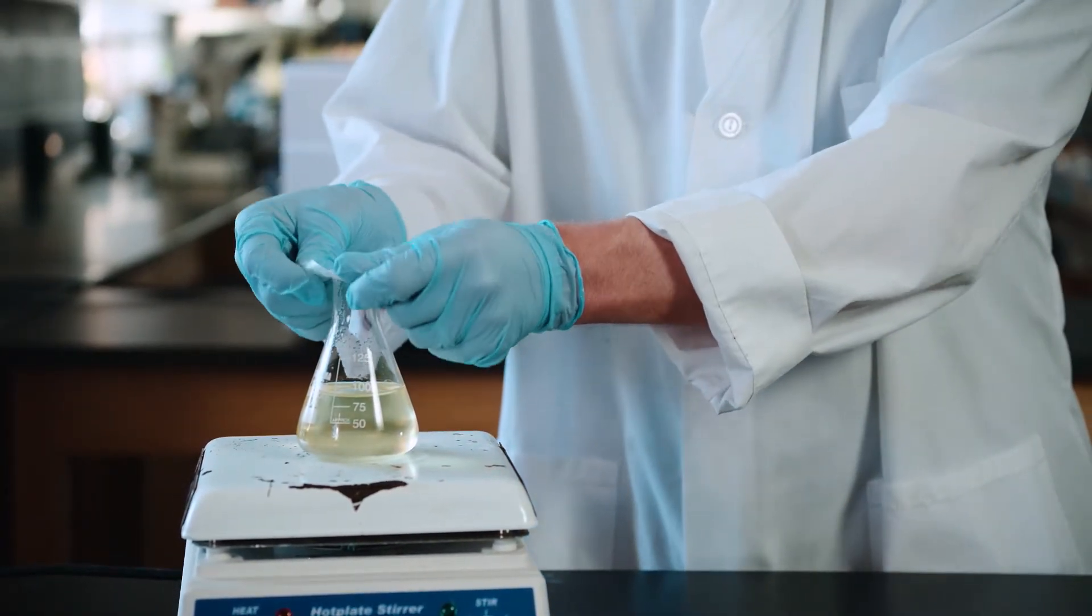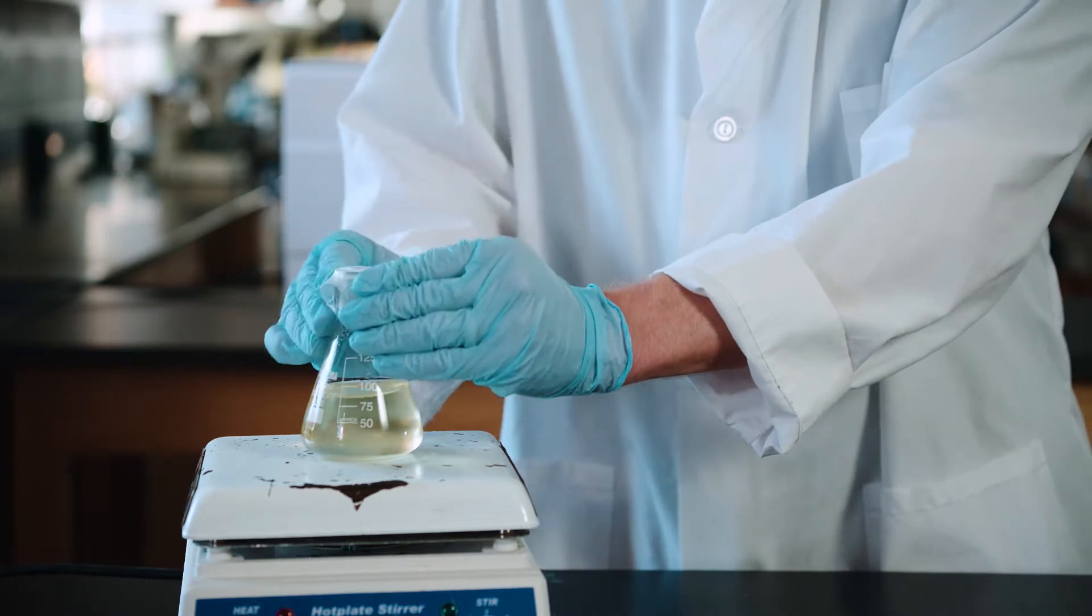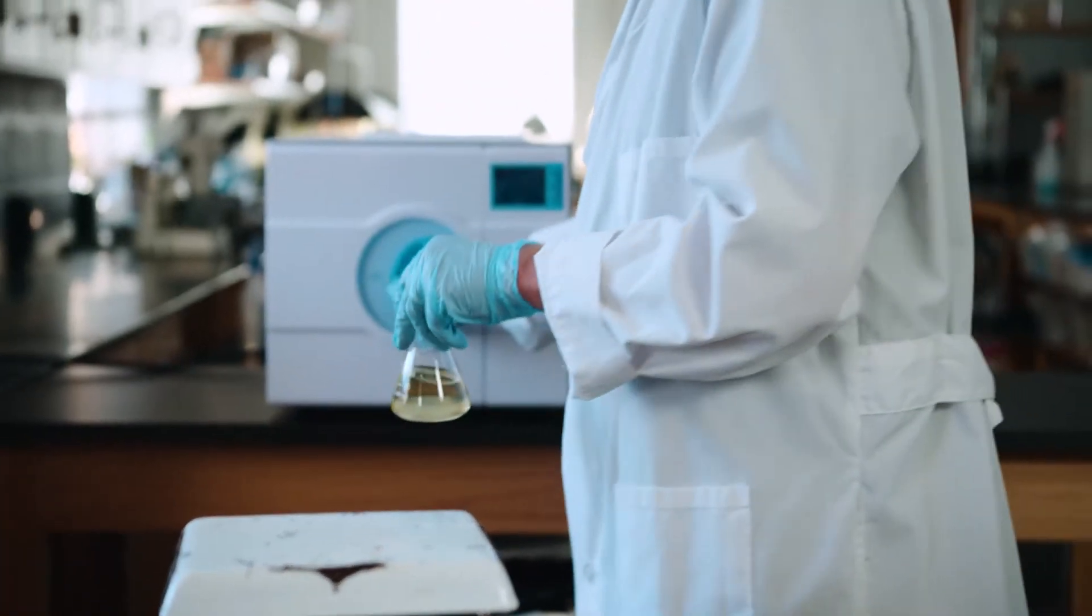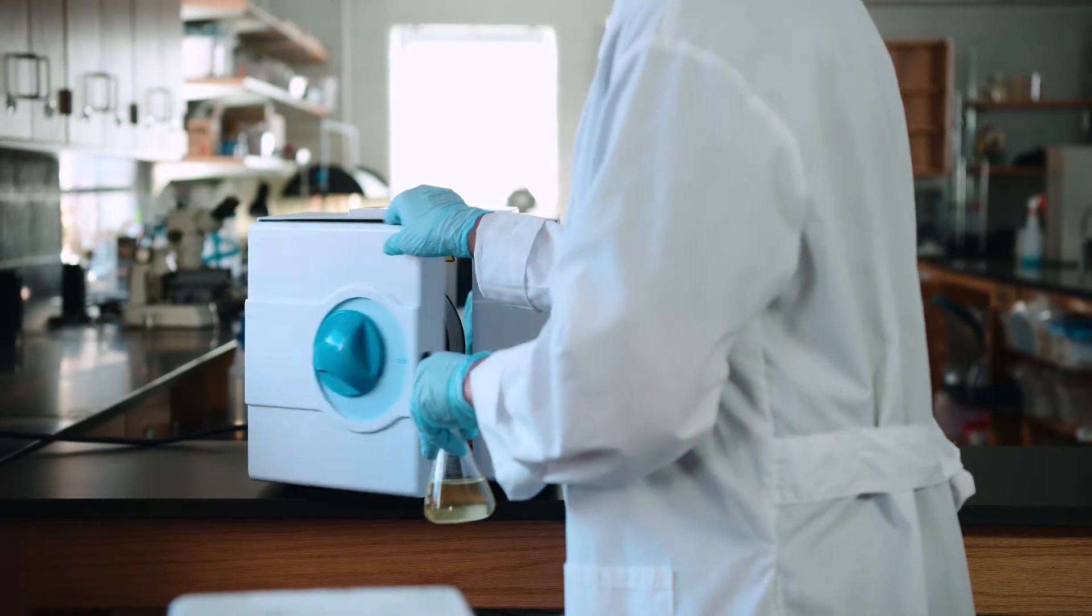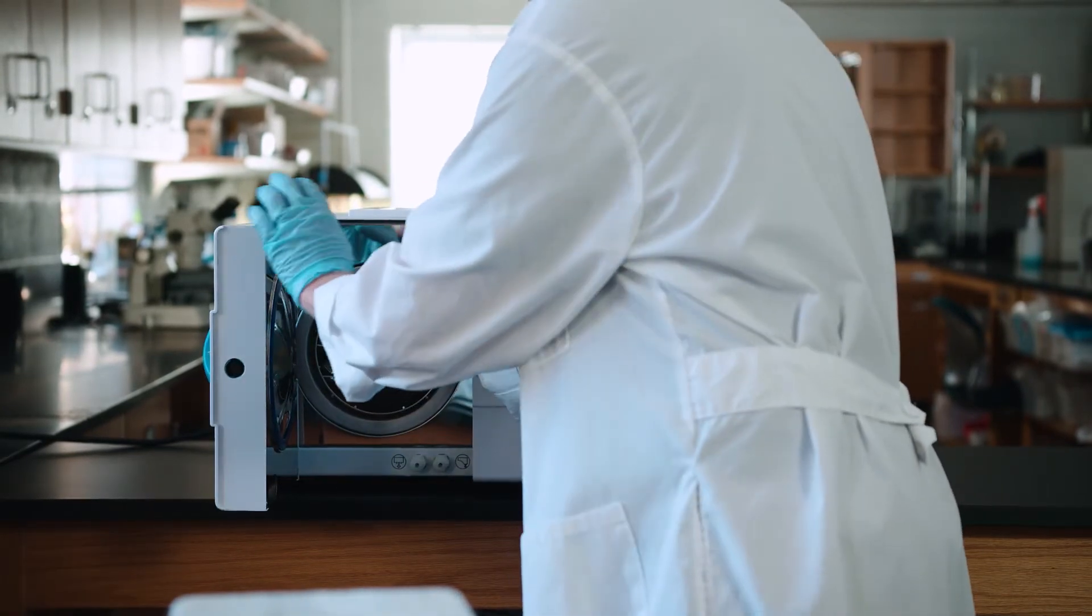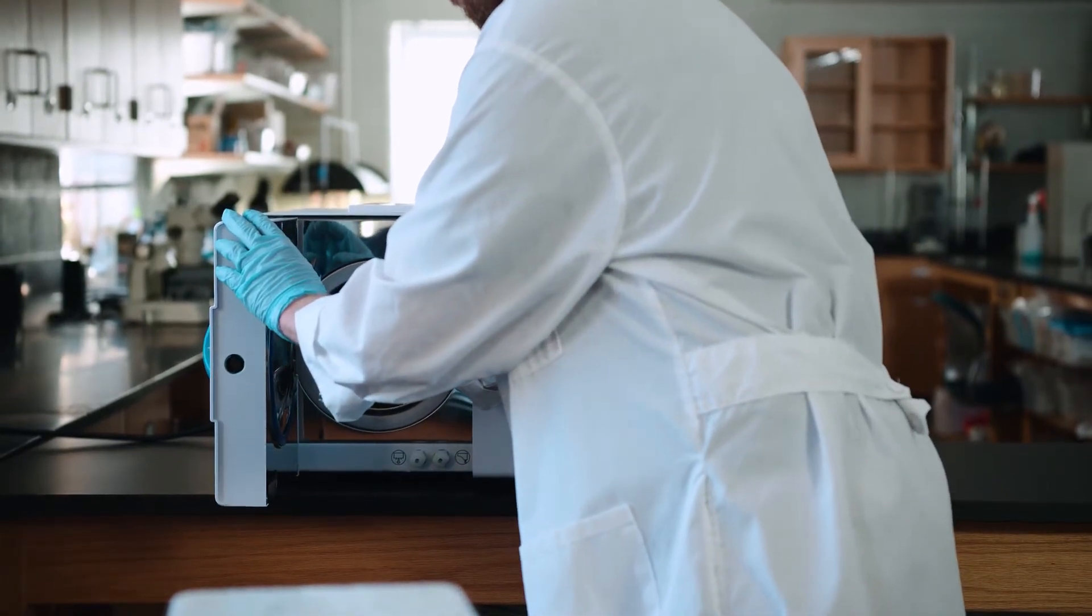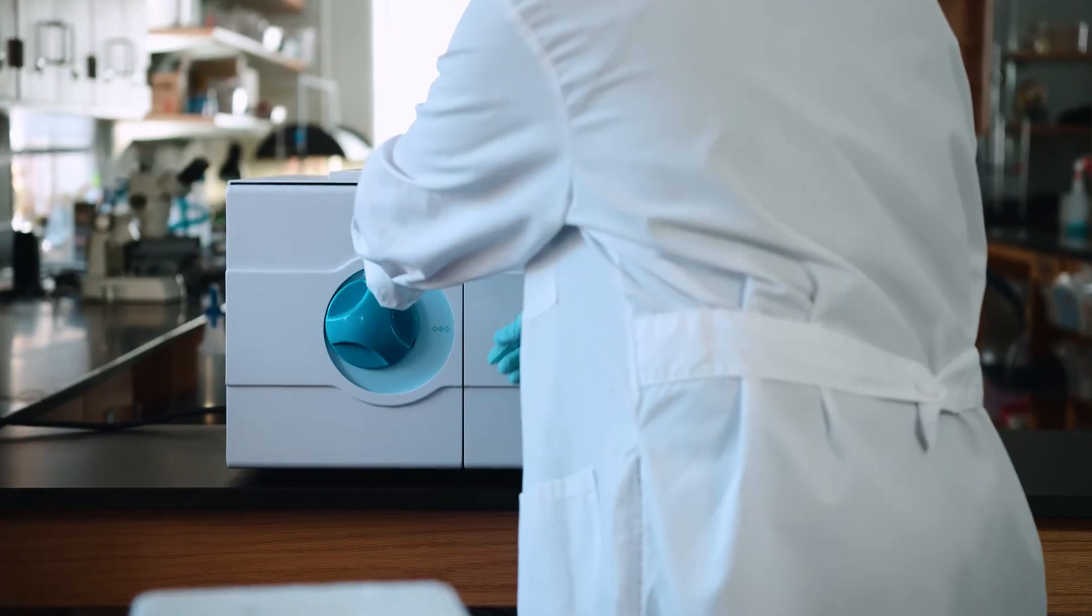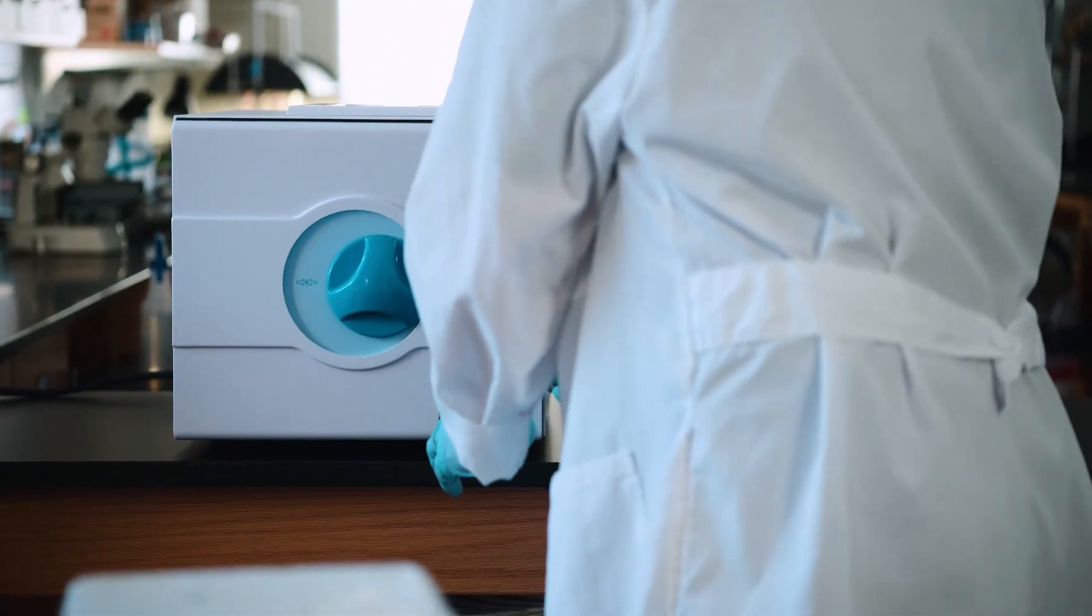Before autoclaving, cap the vial with parafilm or aluminum foil. Most media can be sufficiently sterilized by steam autoclave at 121 degrees Celsius for 20 minutes. The guidelines for sterilization of specific media should be noted on the manufacturer label.